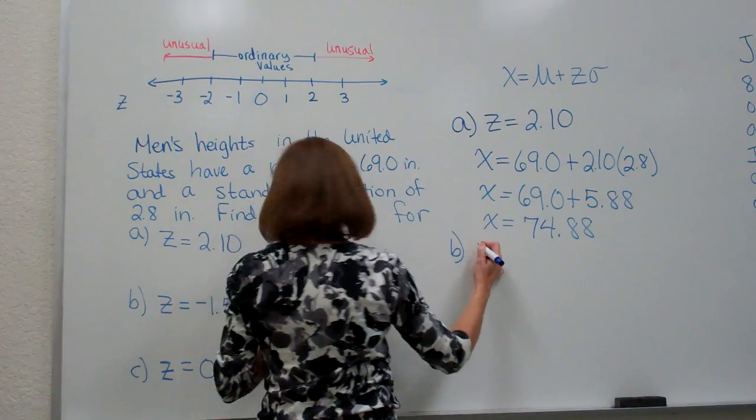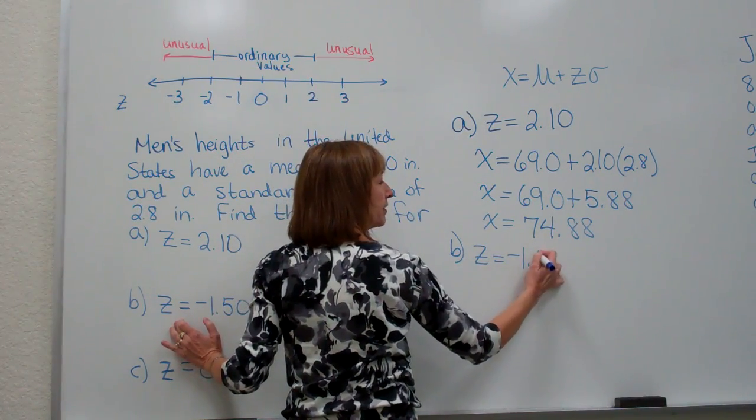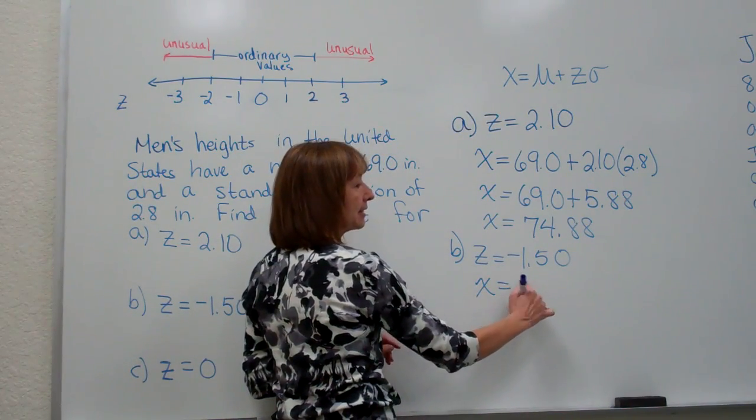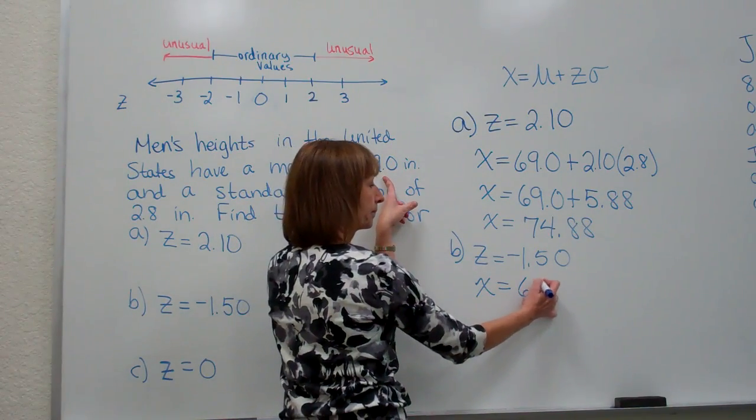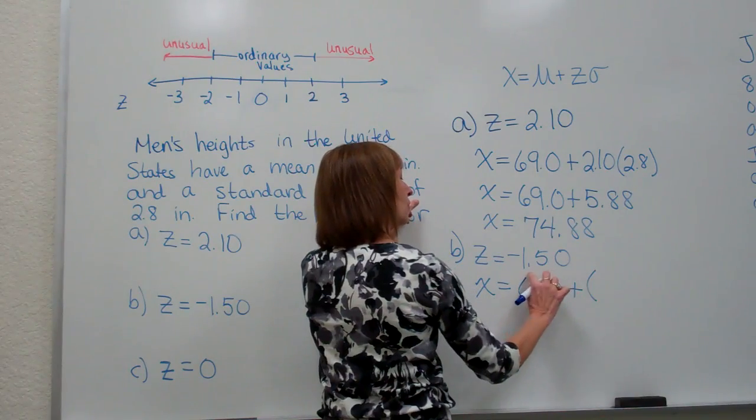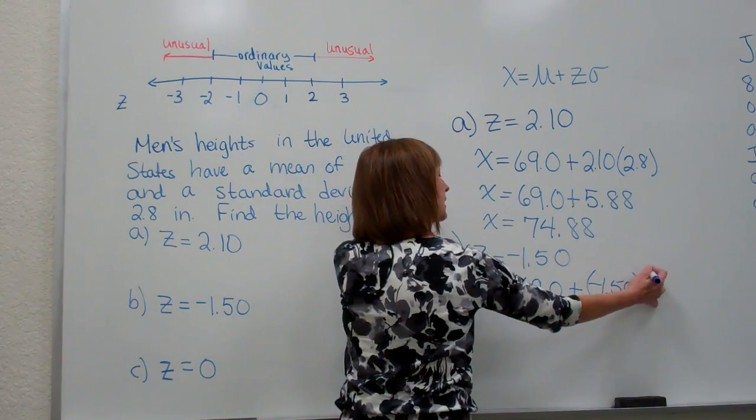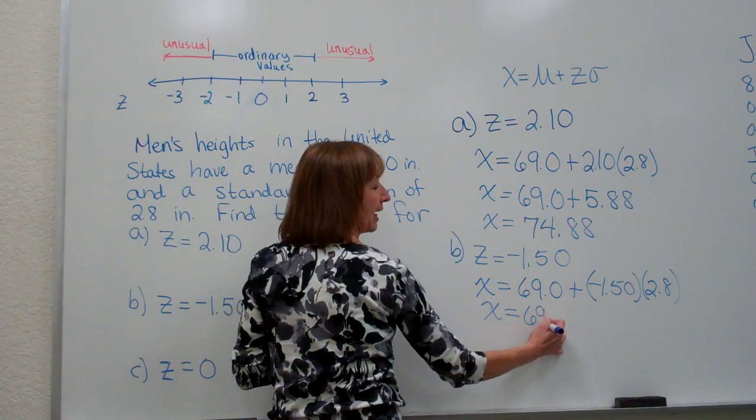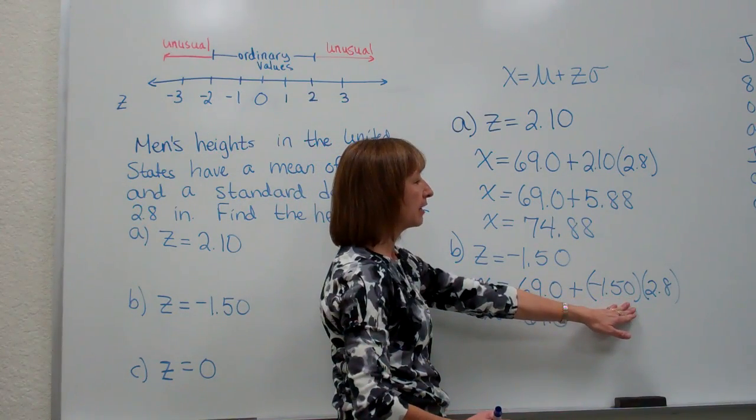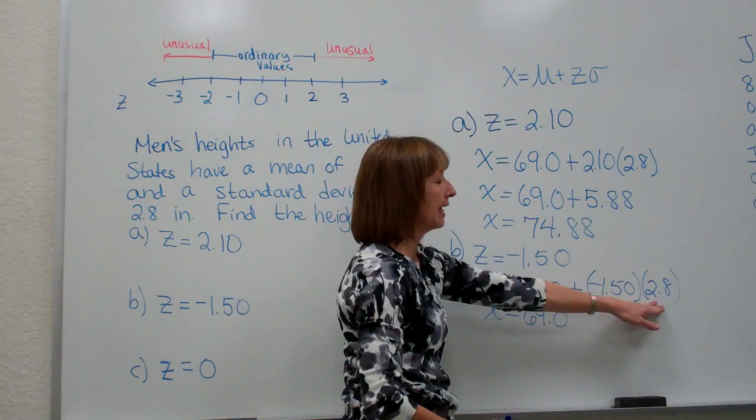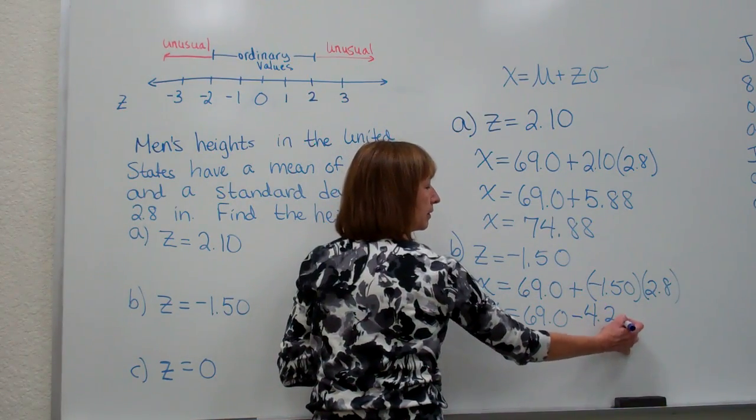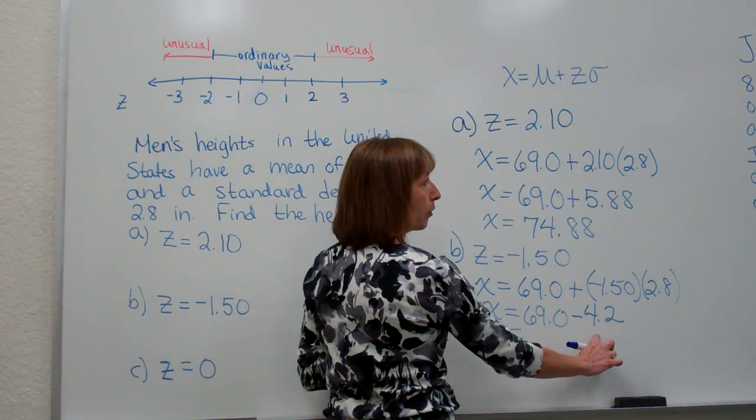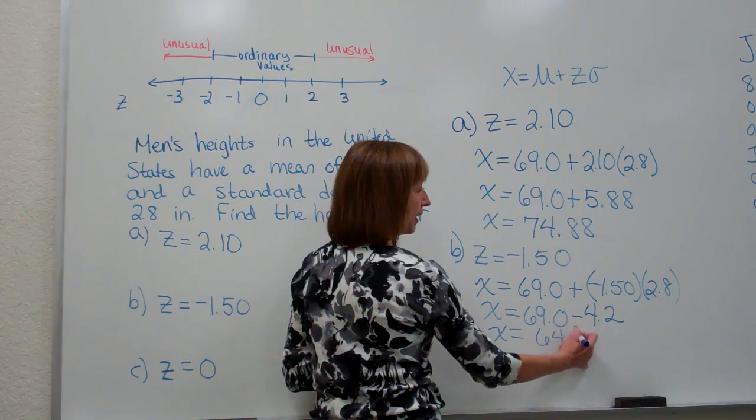Let's do part b. For part b my z-score is a negative 1.50 they gave me and they want me to get the height back. So I have my raw score x is the mean of the data set 69 and then I have plus my z-score of a negative 1.50 times my standard deviation 2.8. So x is equal to 69.0 and then when I multiply the negative 1.50 times the 2.8 I get a negative 4.2 and then I get my raw score of 69.0 minus 4.2 gives me a 64.8.